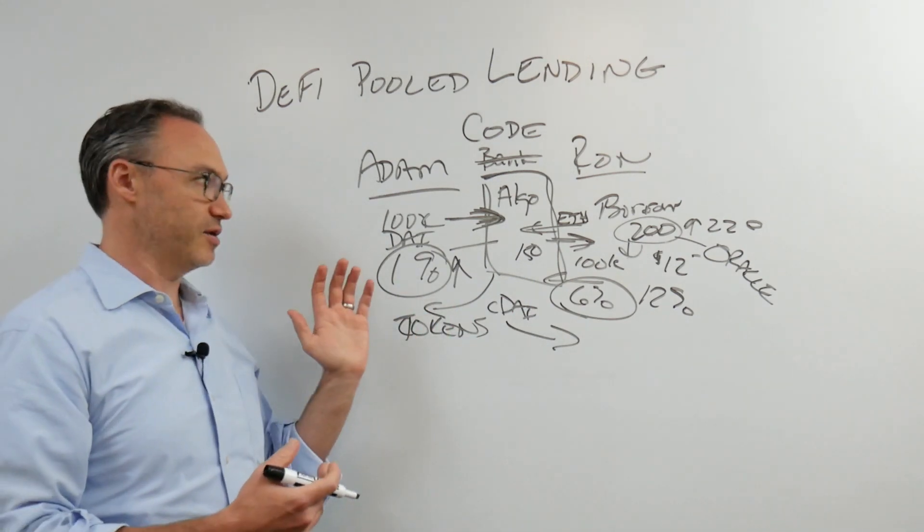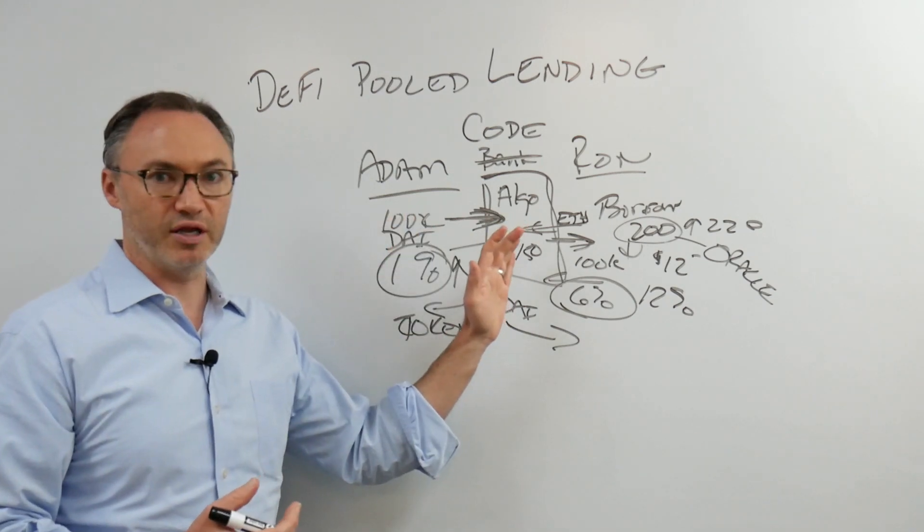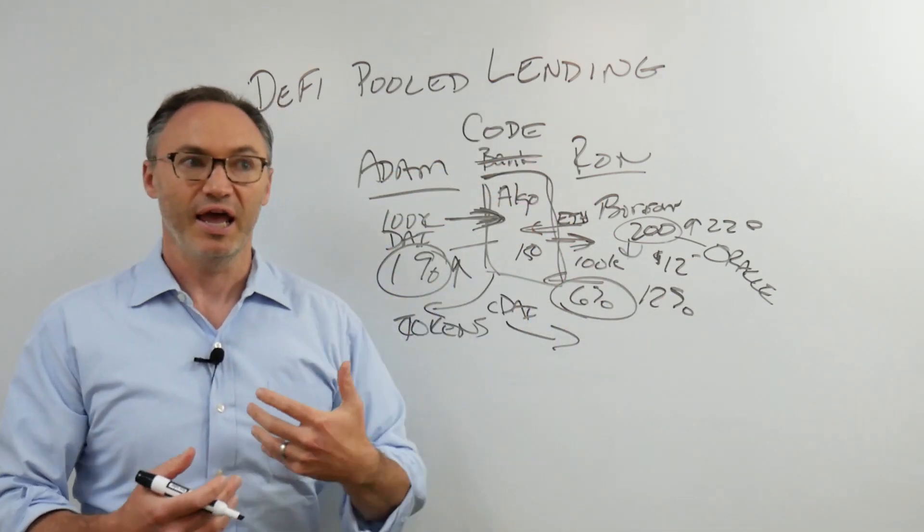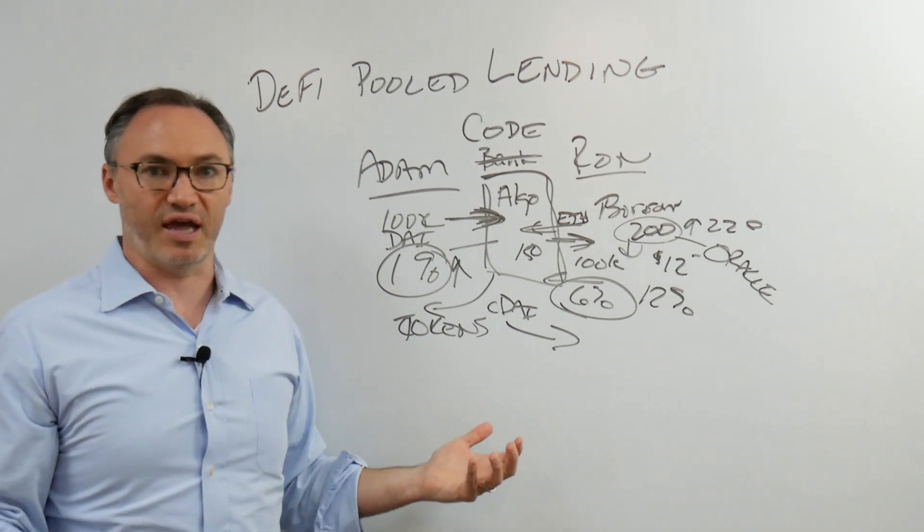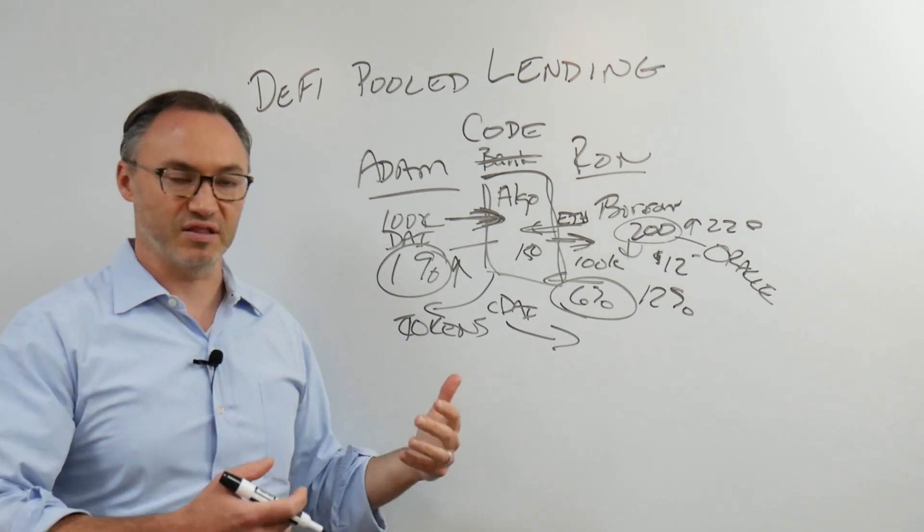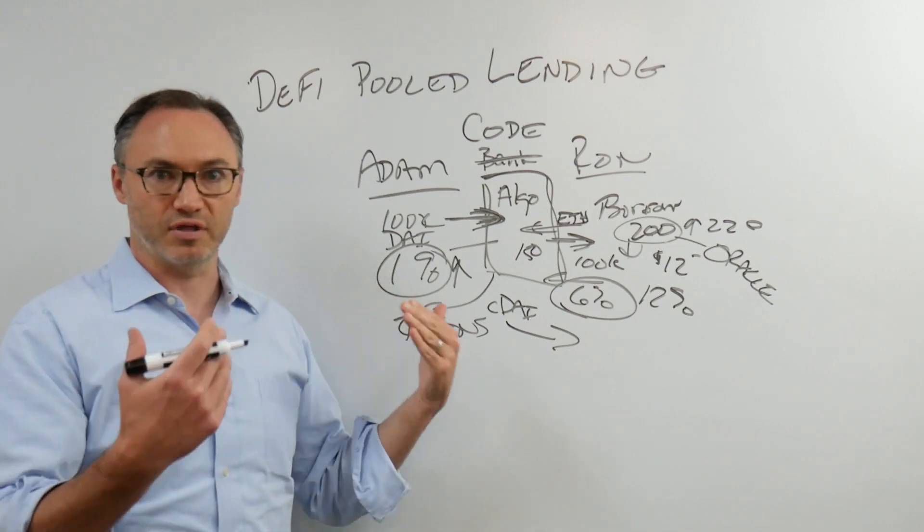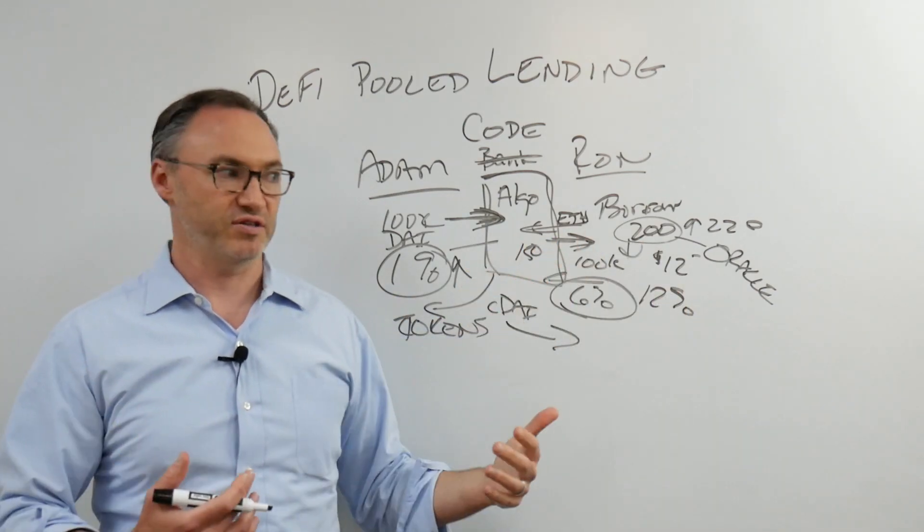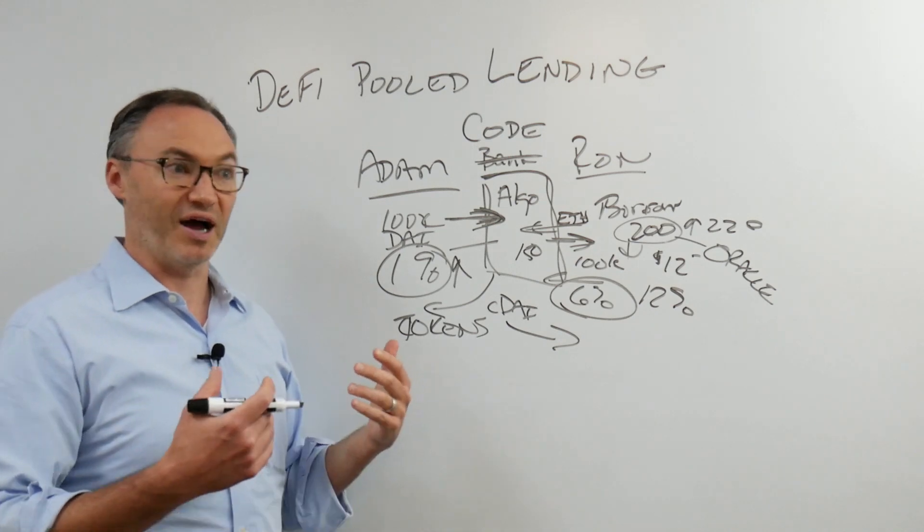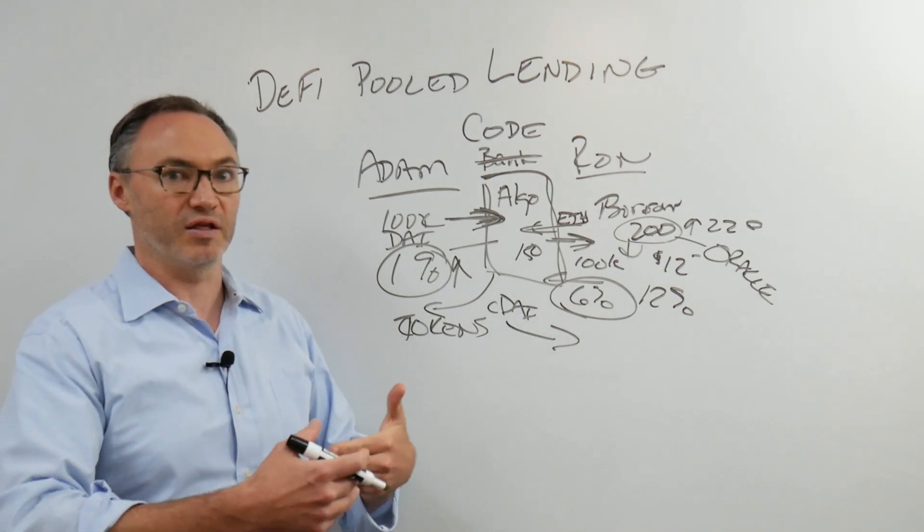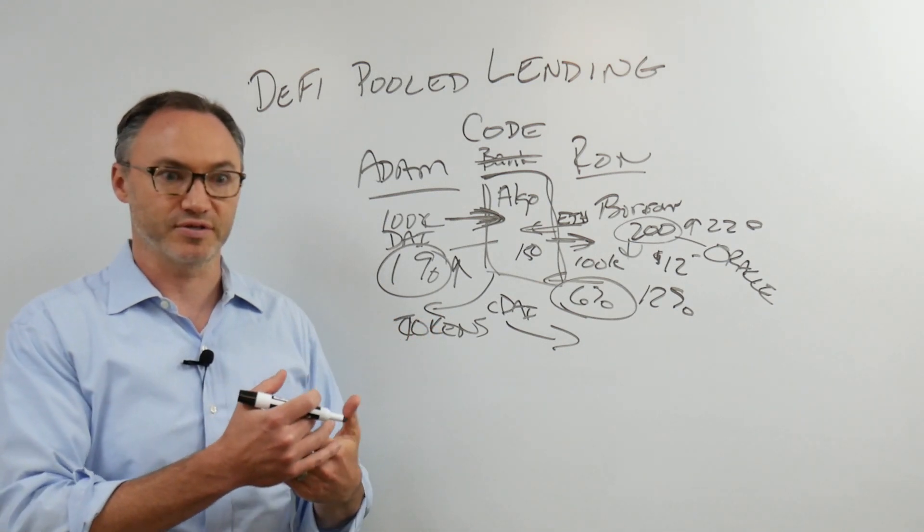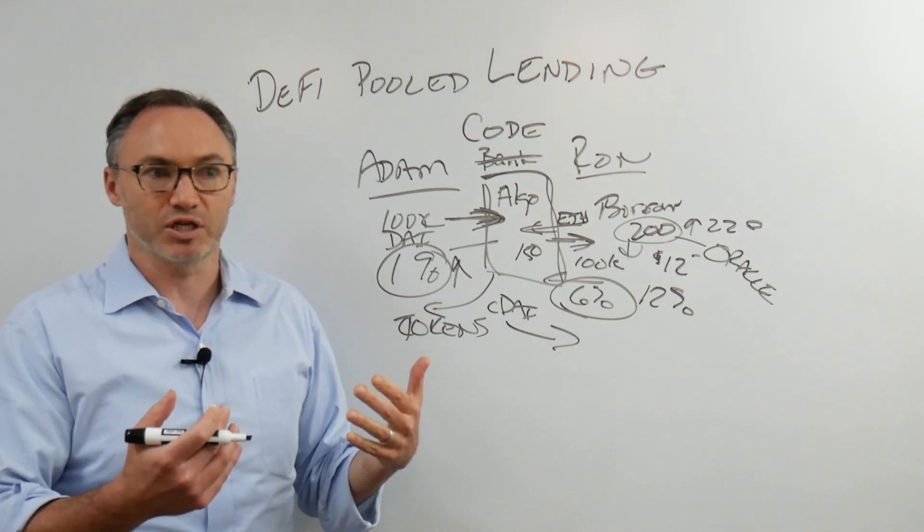So I can, in theory, deposit a whole bunch of money in here and then send those C-DAI tokens to a friend or family member or whatever, and it's like I sent them a savings account. It's like I sent them money that's already earning interest. They don't have to do anything else. I might send it to my family in another country. I might send it to my child, whatever it might be. I can send them tokens. I can send them money that's already earning other money, that's already earning interest.